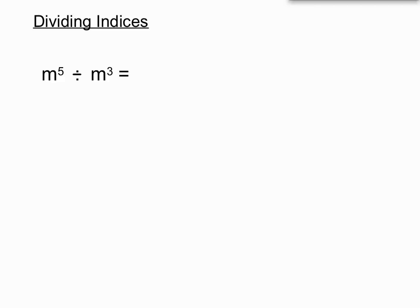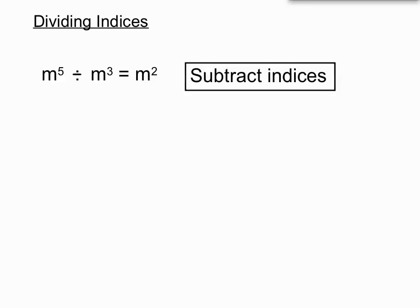Here's our first example to illustrate the technique we use. m to the 5 divided by m to the 3. Our answer here is m squared, and you'll notice that 5 and 3 — we subtract those indices. So the rule is, when we divide terms with indices, we subtract the indices.